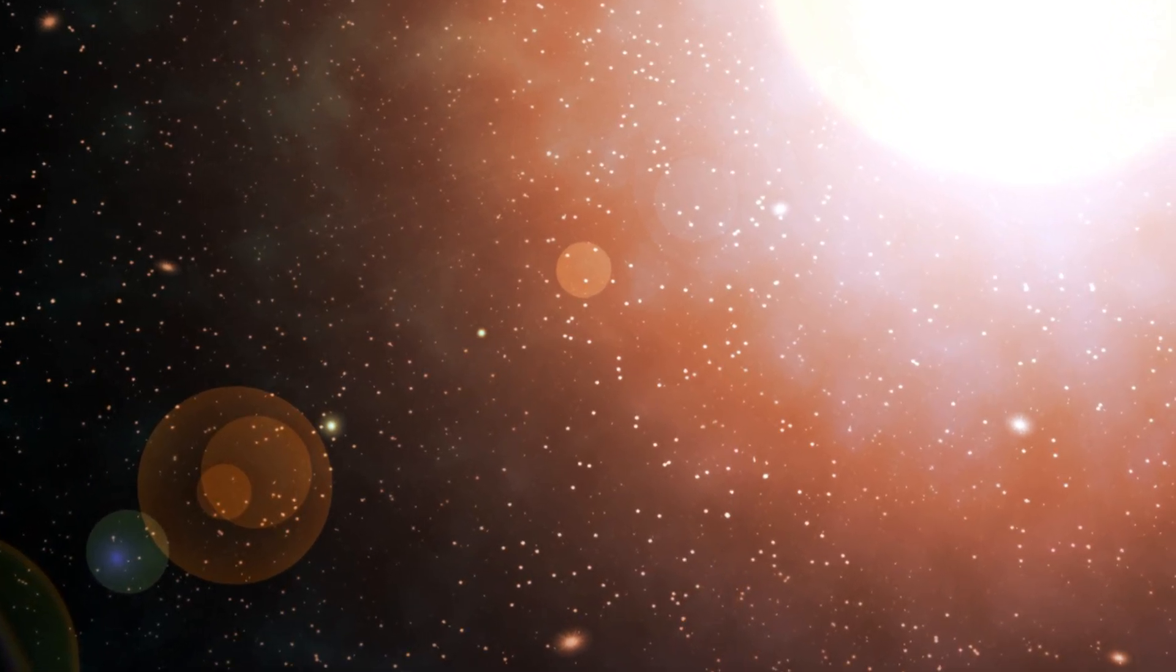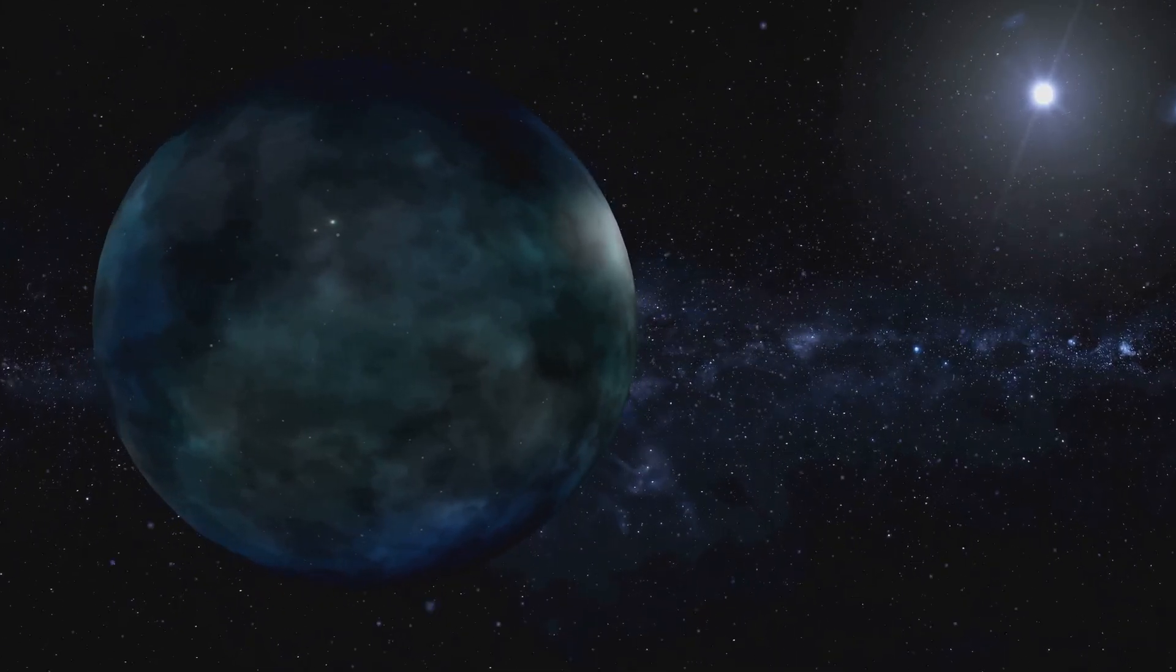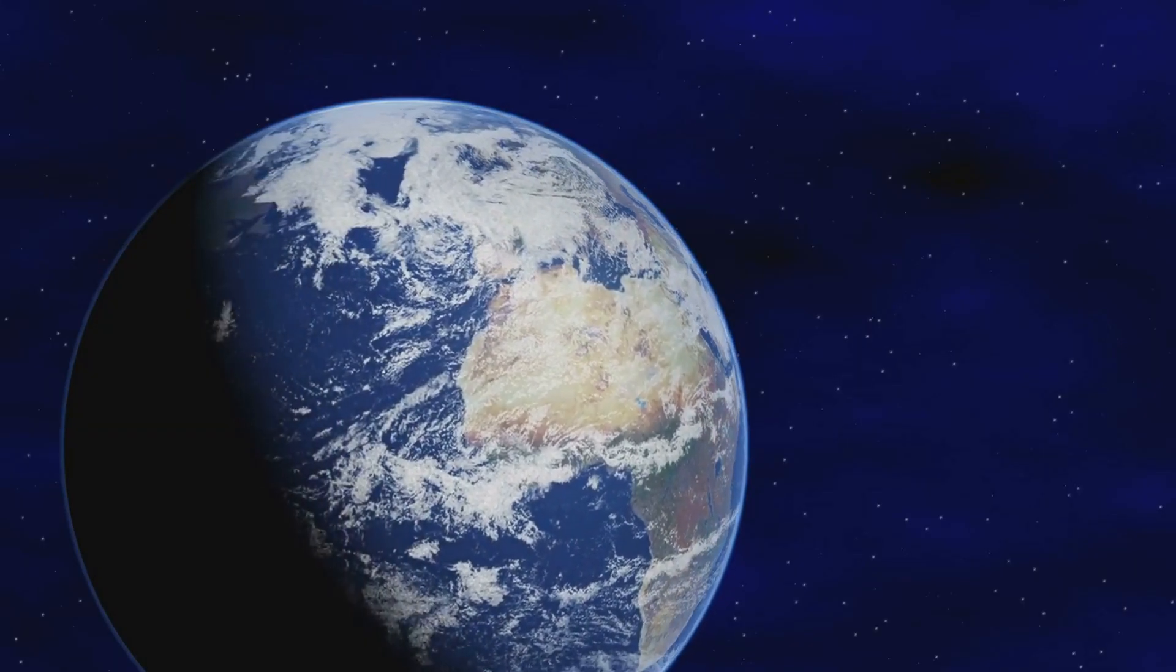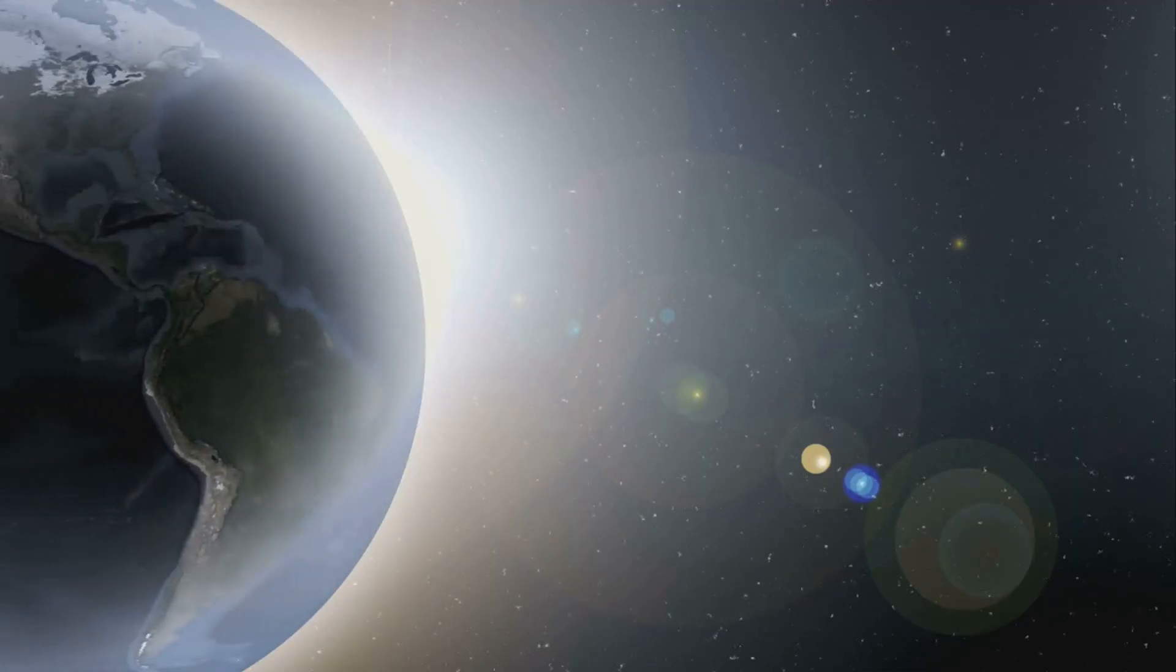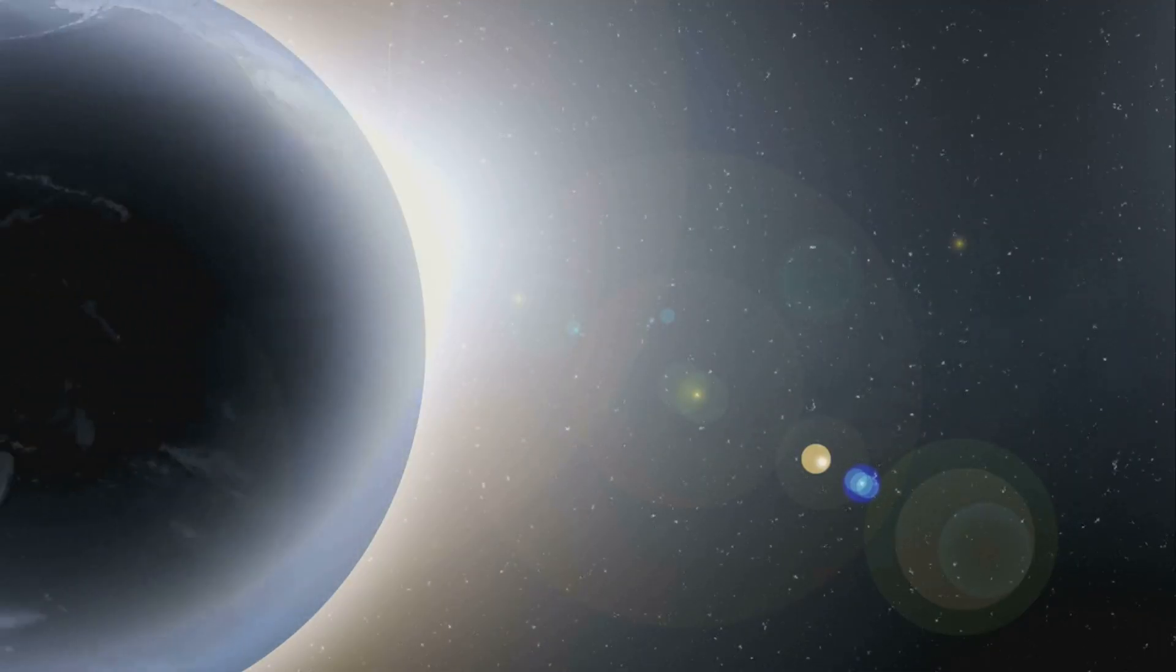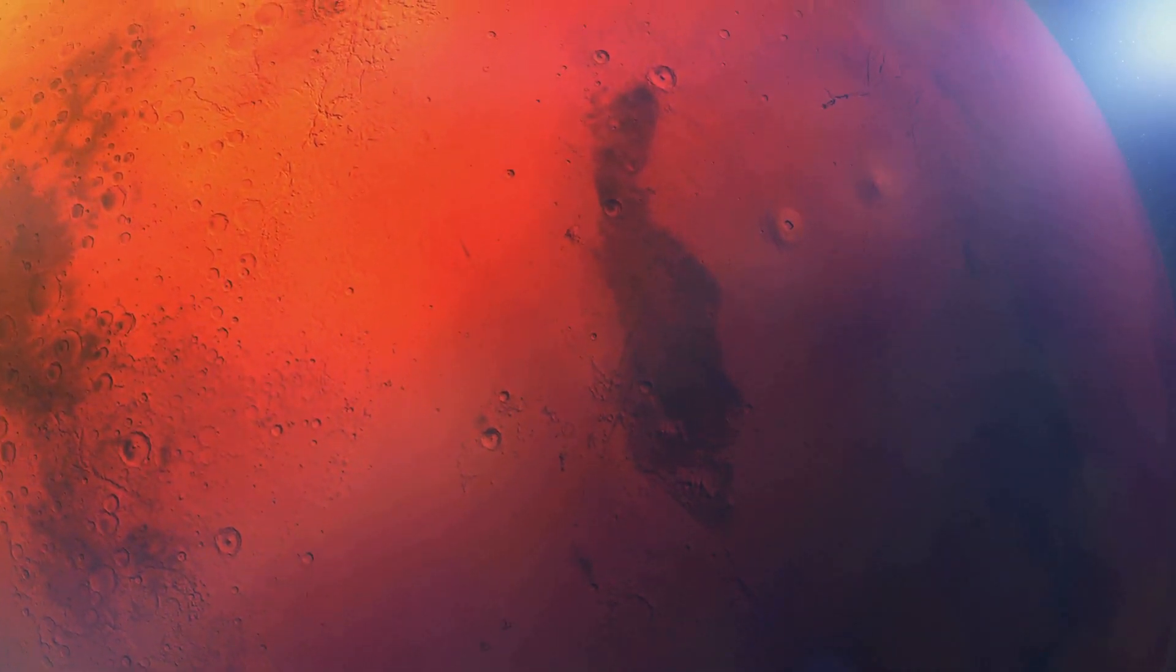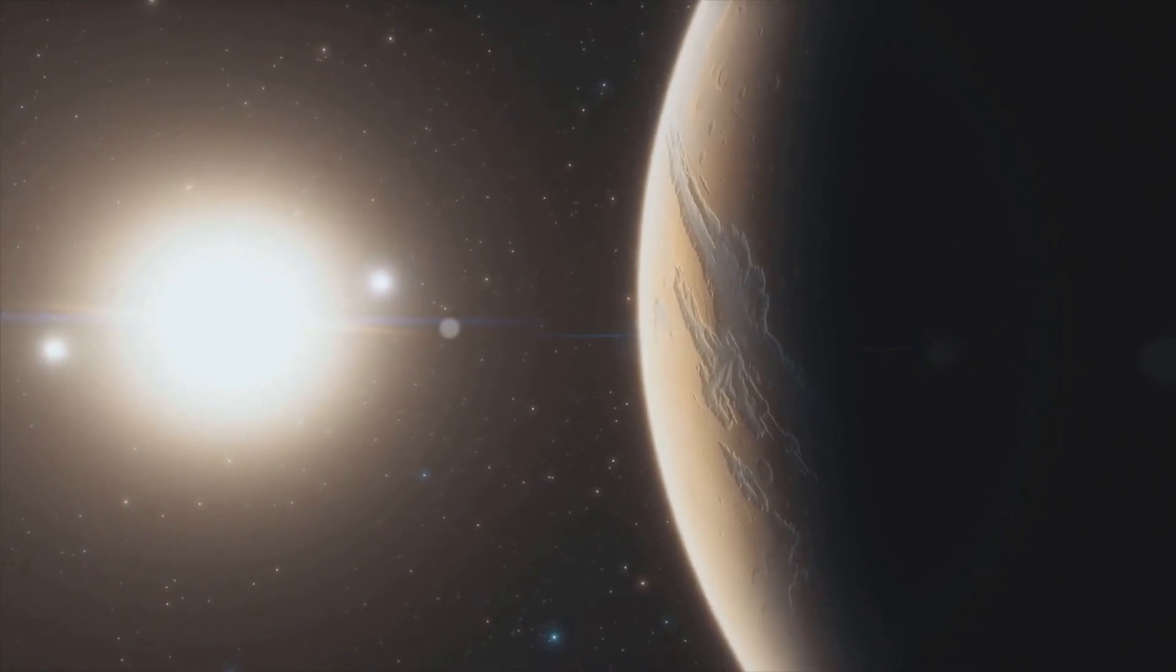What makes HD 40307 G particularly interesting is its location. HD 40307 G orbits its star within the habitable zone, the region around a star where temperatures are just right for liquid water to exist on the surface of a planet. Liquid water is essential for life as we know it, making HD 40307 G a prime candidate in the search for extraterrestrial life.